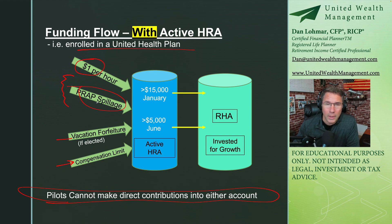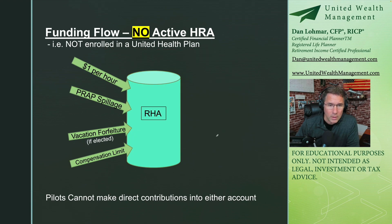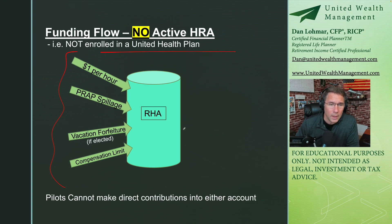Money goes in every January — over $15,000 gets transferred into the RHA — and then anything over $5,000 in June goes into the RHA. The reason they do that is the RHA is invested for long-term growth, while the active HRA is in short-term money market-type funds so it can be spent right away. You don't want a 30-year-old new hire's money sitting in a money market account for 30 years, so they transfer it twice a year. If you're not in a UnitedHealth plan, the funding skips the active HRA and goes directly into the RHA.